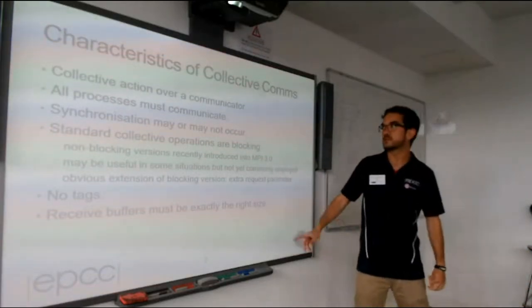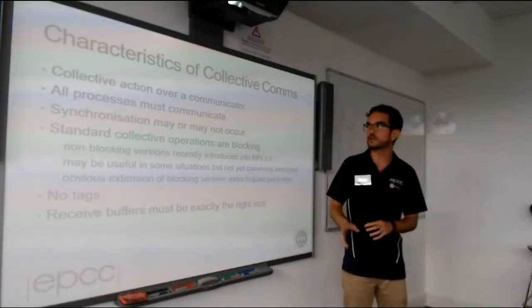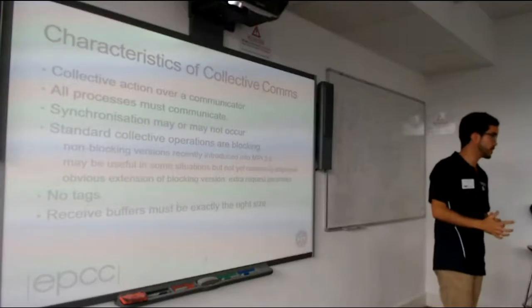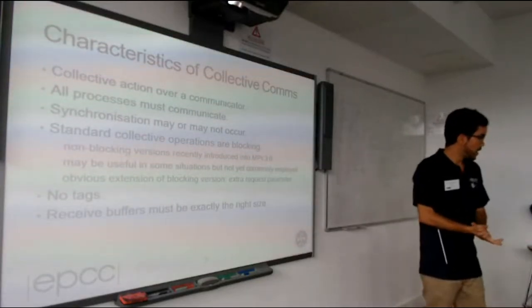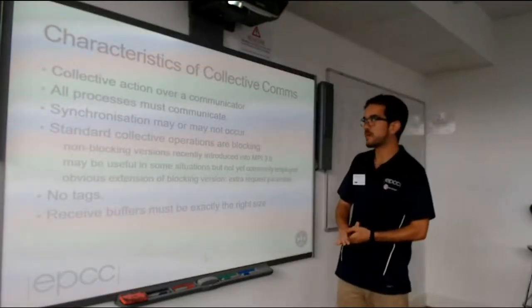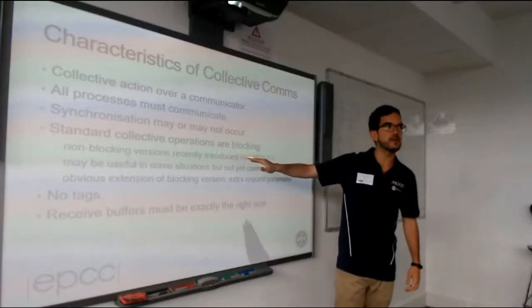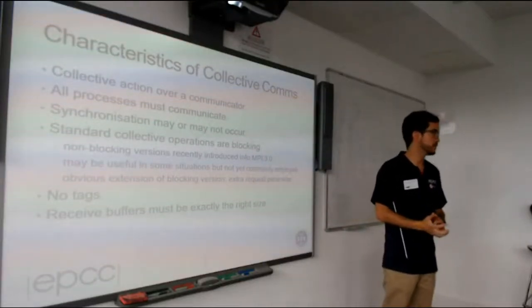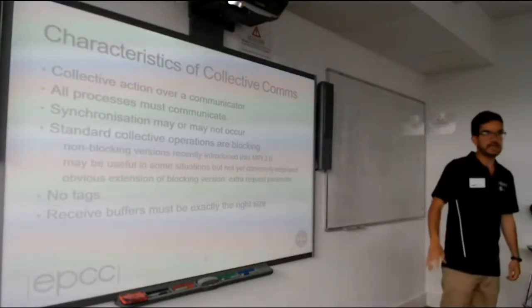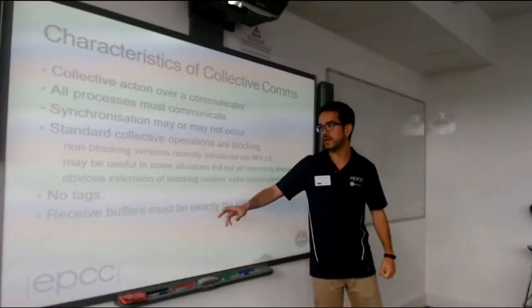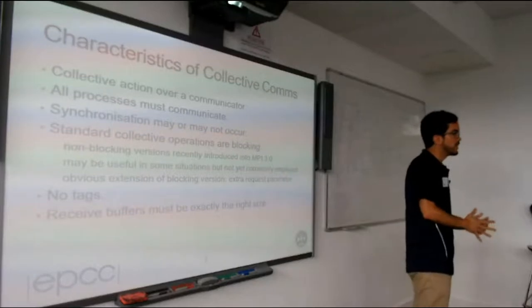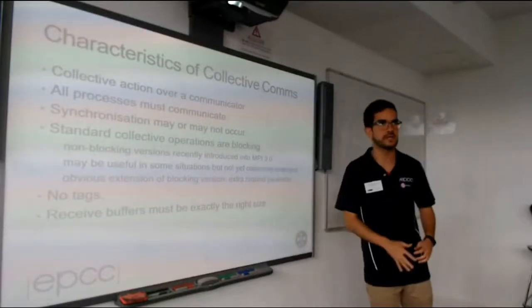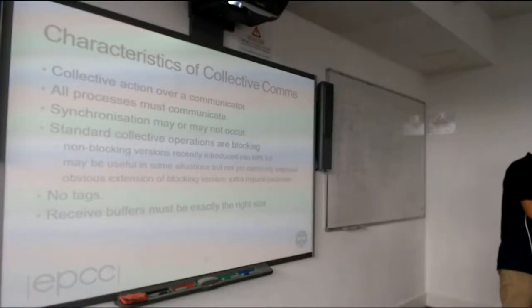The key characteristic is that there is a communicator and all processes inside that communicator are involved and should call the collective communication operation. In MPI version 2 this operation is blocking, but MPI version 3 introduced a non-blocking version, which can be useful in some cases. We don't need a tag, and we should be careful about the receive buffer — it should be the right size, otherwise we can have memory problems.